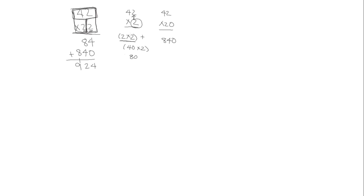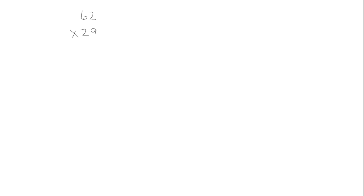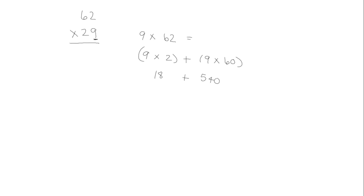Now we're going to look at 62 times 29. We have the ones in the second factor times the first factor, and we can use the distributive property to say this is 9 times 2 ones, plus 9 times 60, which gives us 18 plus 540. When we add those together, we get 558, which is our first partial product.